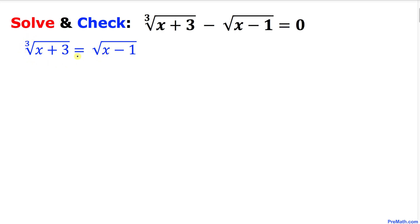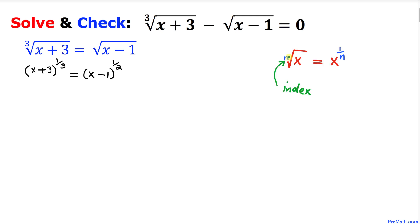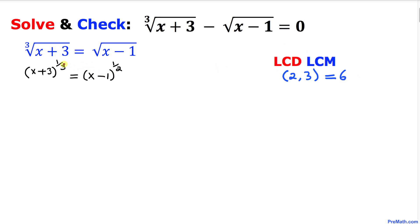Now we are going to convert this radical form into exponential form. The left hand side cube root can be written as x plus 3 to the power of 1/3, and the square root of x minus 1 can be written as x minus 1 to the power of 1/2. The rule applied here is: the radical of x with index n can be written as x to the power of 1 over n.